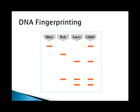DNA fingerprinting is another application — it can be used to solve crimes or determine the identity of biological parents. DNA fragments are cloned and then analyzed. Each individual, except for identical twins, has unique DNA patterns. For example, looking at Mary and two possible fathers, Bob and Larry, you can match the child's pattern to determine that Larry is the father because the child's DNA is a combination of Mary's and Larry's.